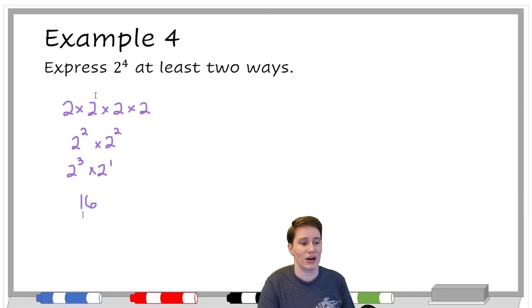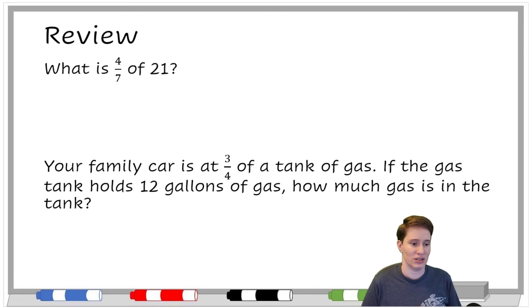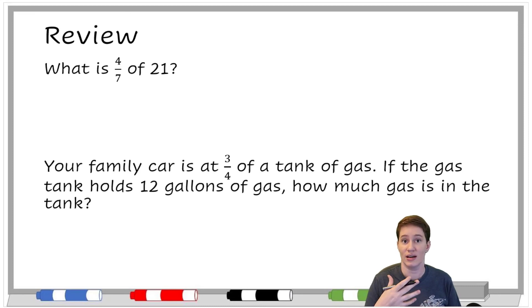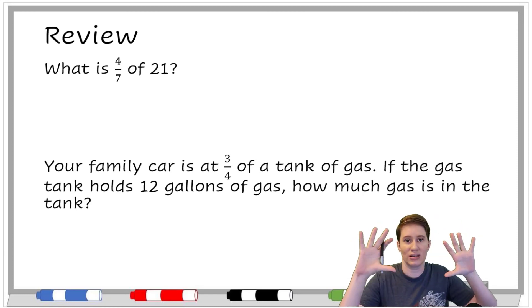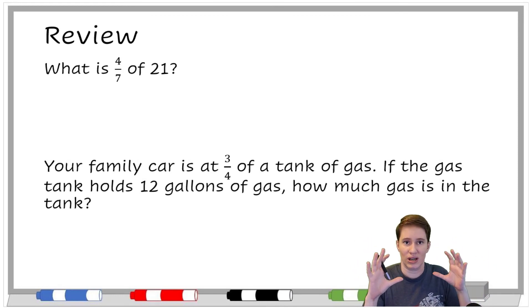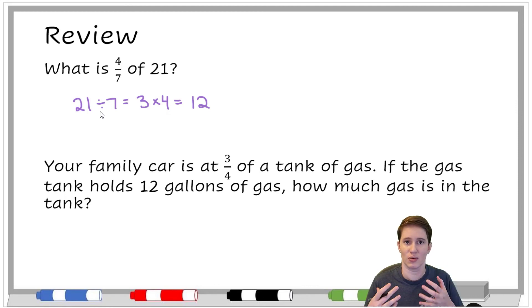And here we've got a review of another concept you should have seen in the past. What is 4 sevenths of 21? How do I take a fractional part of a whole number? The idea is to think of the 21 as being in groups of 7 so that you can take 4 of those groups — that's what the fraction 4 sevenths means. Another way to say that: do 21 divided by 7, then take that answer and multiply it by 4. That's essentially what a fraction means: multiply by the top number, divide by the bottom number. So 12 is our answer.